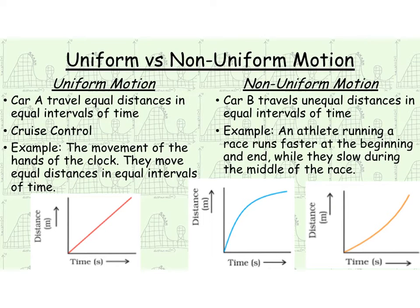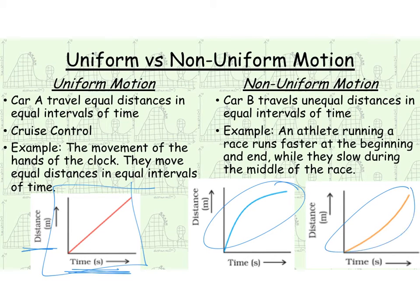For example, car B travels unequal distances in equal intervals of time, or an athlete running a race runs faster at the beginning and ends while slow in the middle of the race. So hopefully you see that they're changing their speed, they're changing their velocity. So when we have a graph that is completely linear in distance versus time, that means uniform motion. If you have a graph that has a curve in it in position versus time, what that's telling you is you have non-uniform motion, which means you have acceleration.